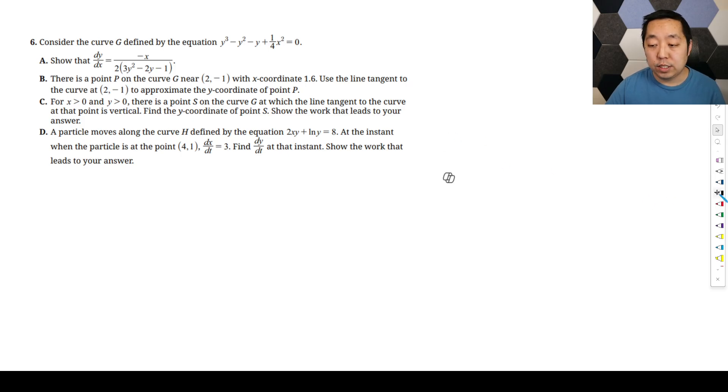So now we're going to look at FRQ number six of the 2025 AP Calculus AB exam. Consider the curve G defined by this. Show that dy dx is equal to that.